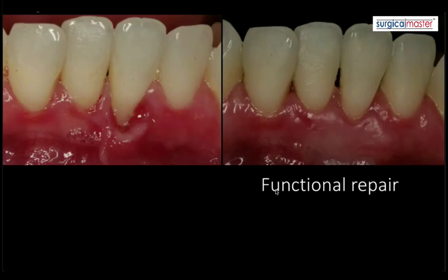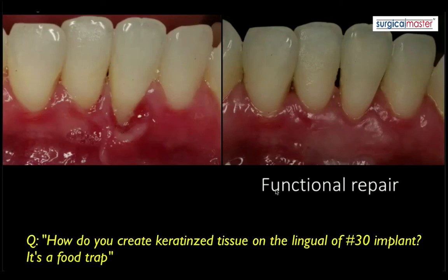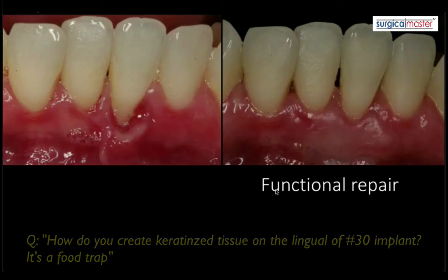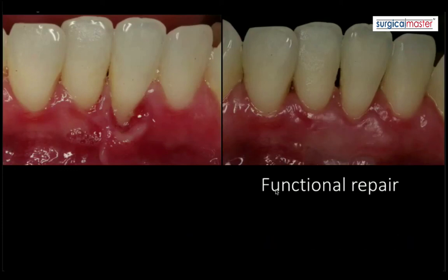Regarding creating keratinized tissue on the lingual of a lower molar implant where there's a food trap: grafting on the lingual aspect is unfortunately not possible or recommended at this time. You can't make a split-thickness incision there — it's actually risky to operate in the floor of the mouth. That's a limitation of treatment.